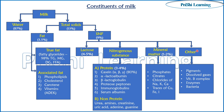Other compounds include pigments such as carotenes, dissolved gases, Vitamin B complex, enzymes, and bacteria. An important enzyme is alkaline phosphatase, also called an indicator of pasteurization — it tells us whether pasteurization has been successfully attained.